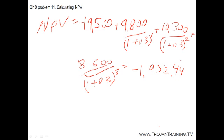We can also find the net present value using the financial calculator. I'll walk you through the inputs for the TI — the Texas Instruments Financial Calculator. When the interest rate is zero for the first case, you clear everything first, then punch in CF0, the cash flow in year zero, which is minus $19,500. Remember to put your initial cash flow as negative. Hit enter.